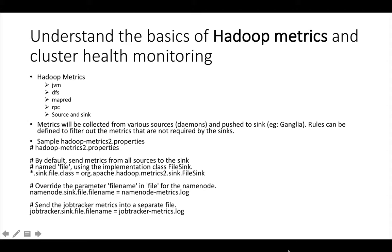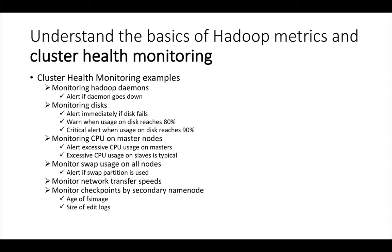Typically, if you are not using Cloudera Manager, you integrate with sinks such as Ganglia. All those details will be configured in the file called hadoop-metrics2.properties. First, all the metrics will be flushed into the files defined in this configuration — name node sink file, job tracker sink file or resource manager sink file, etc. are the parameters which need to be configured for the log file names. Based on the settings defined in hadoop-metrics2.properties, the metrics will be saved into the configured sink.